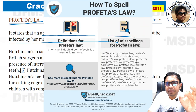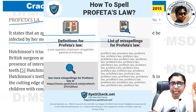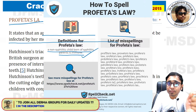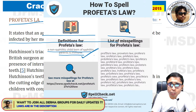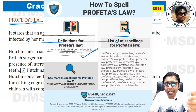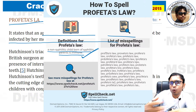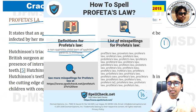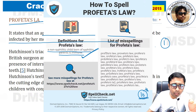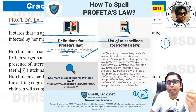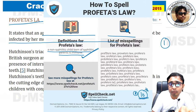Profeta's law: a non-syphilitic child born to syphilitic parents is immune. Combining Kassovitz's and Profeta's laws — if a woman with syphilis has pregnancies over 10 years, the first child is severely affected, but the 10th child probably will not have any manifestations of syphilis, and that non-syphilitic child born to syphilitic parents is considered immune.